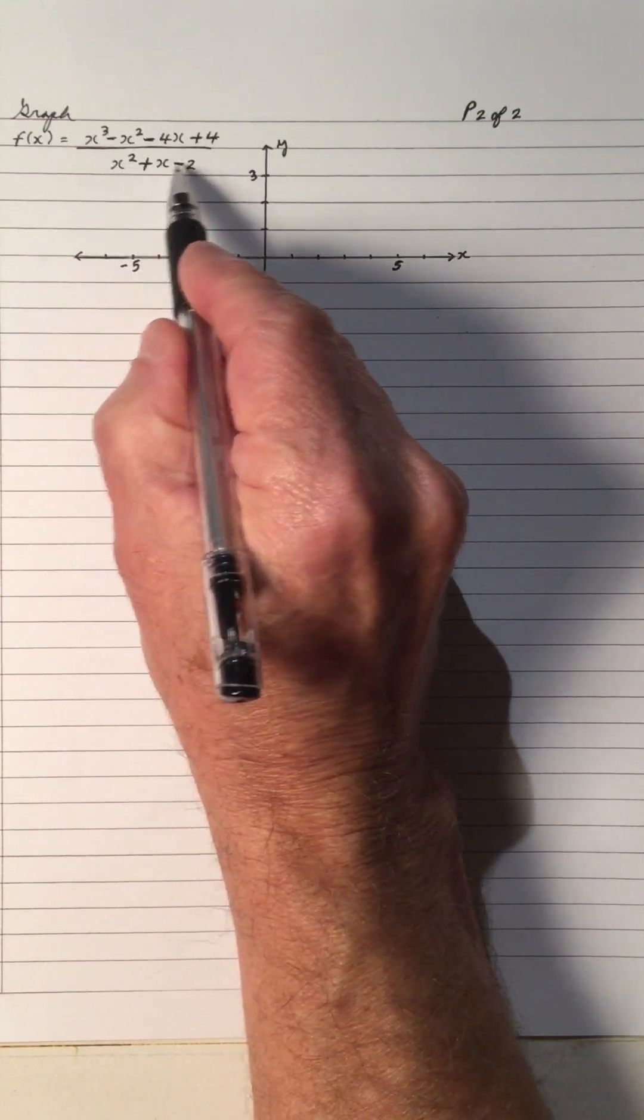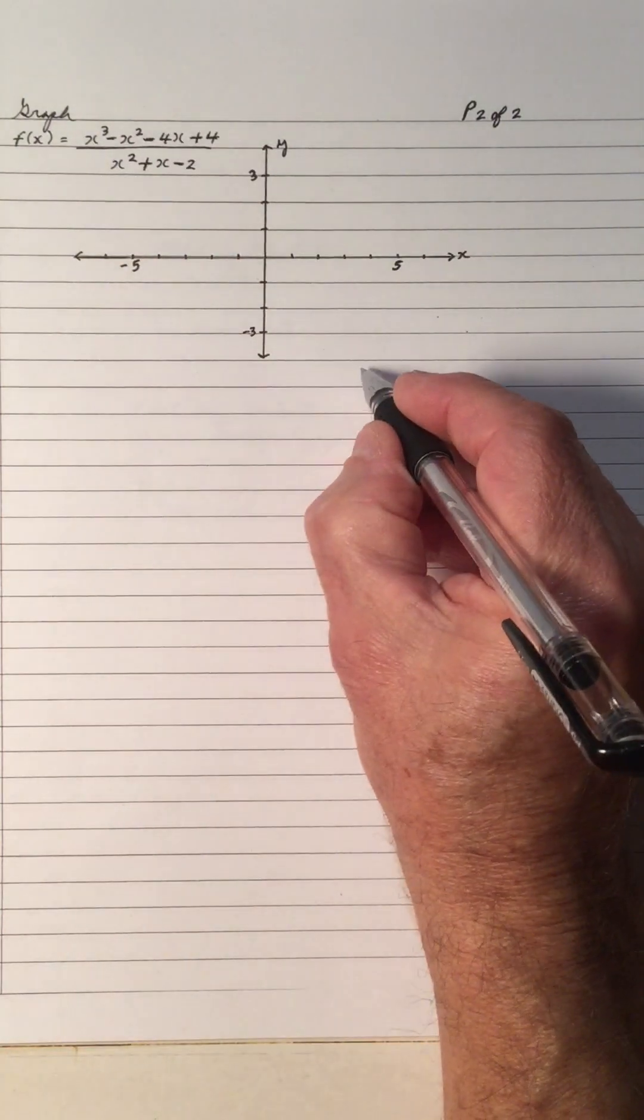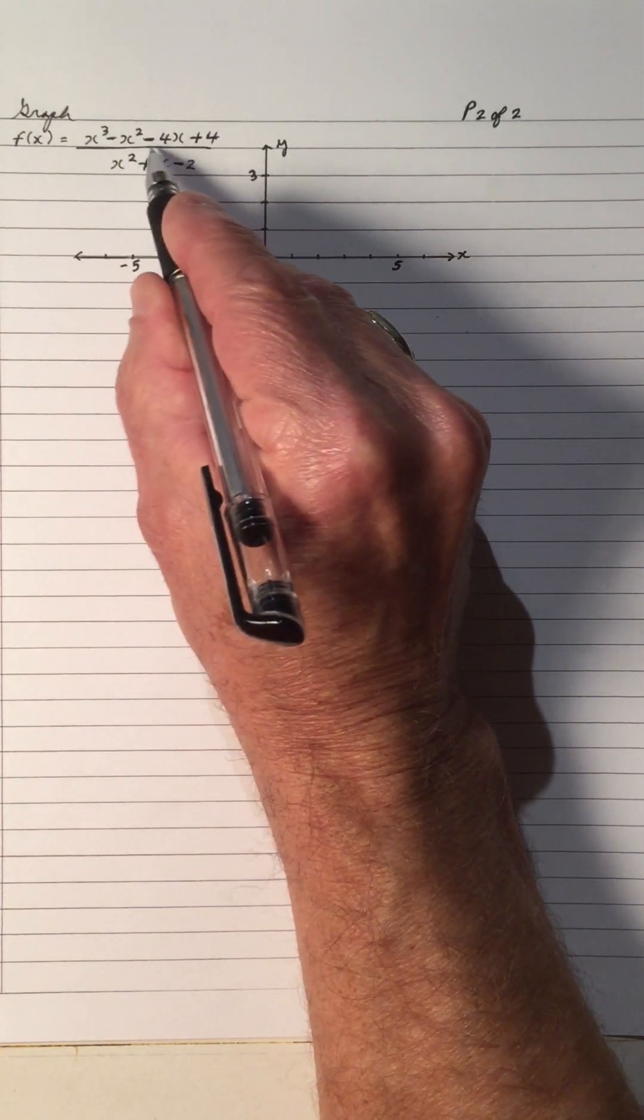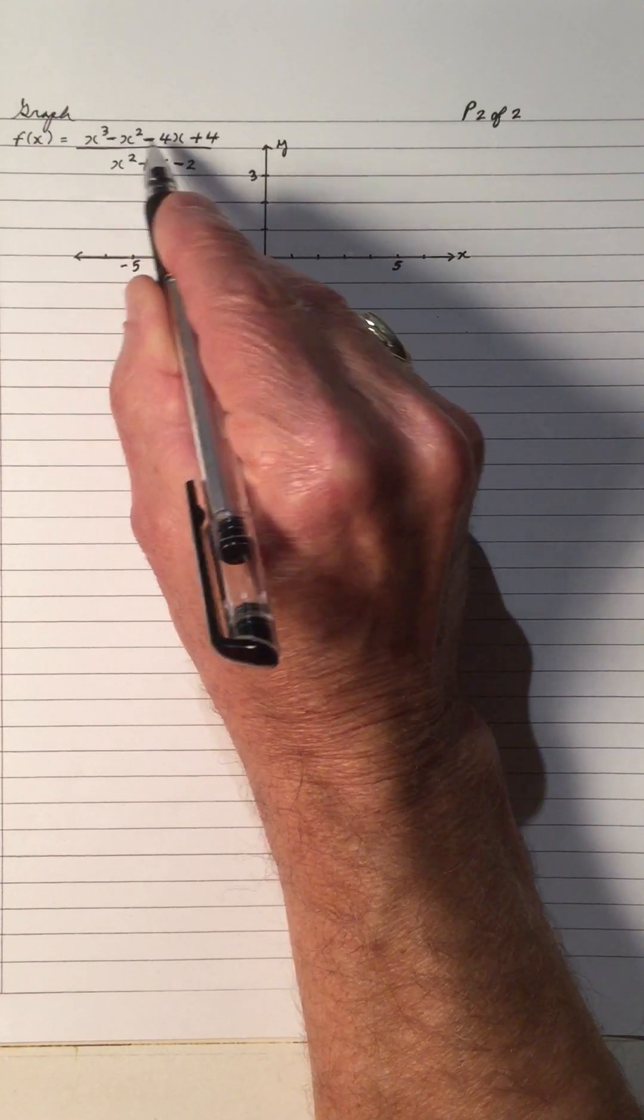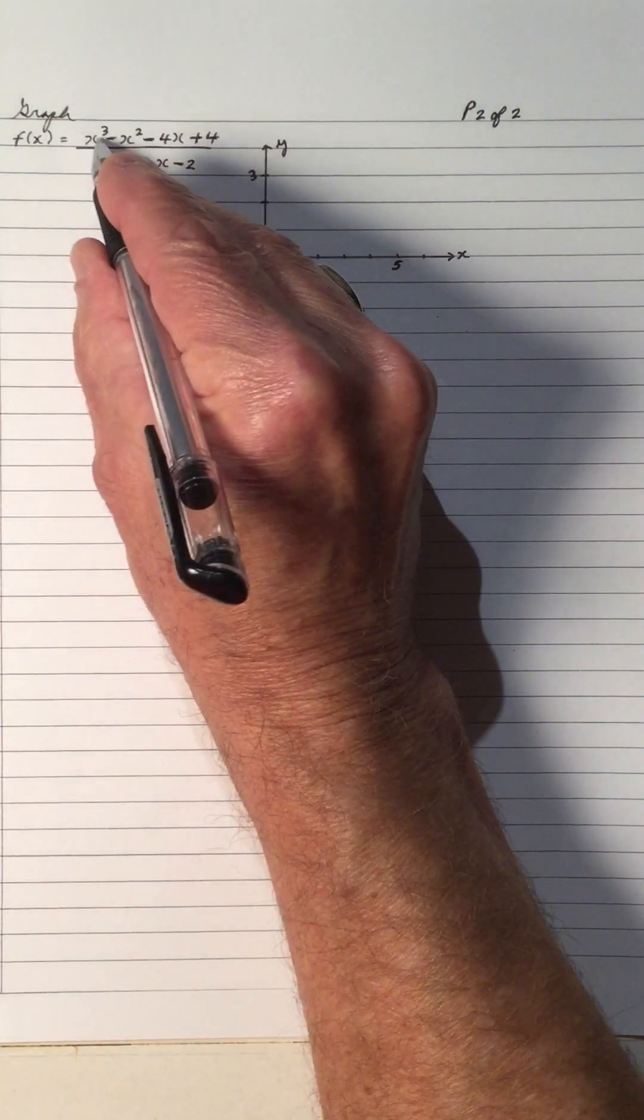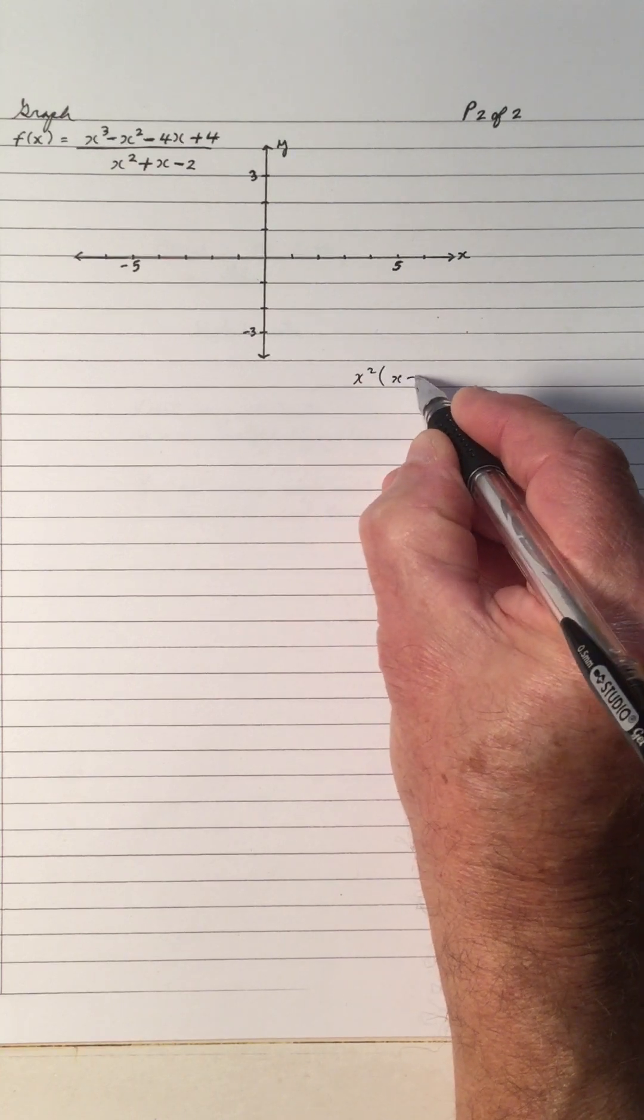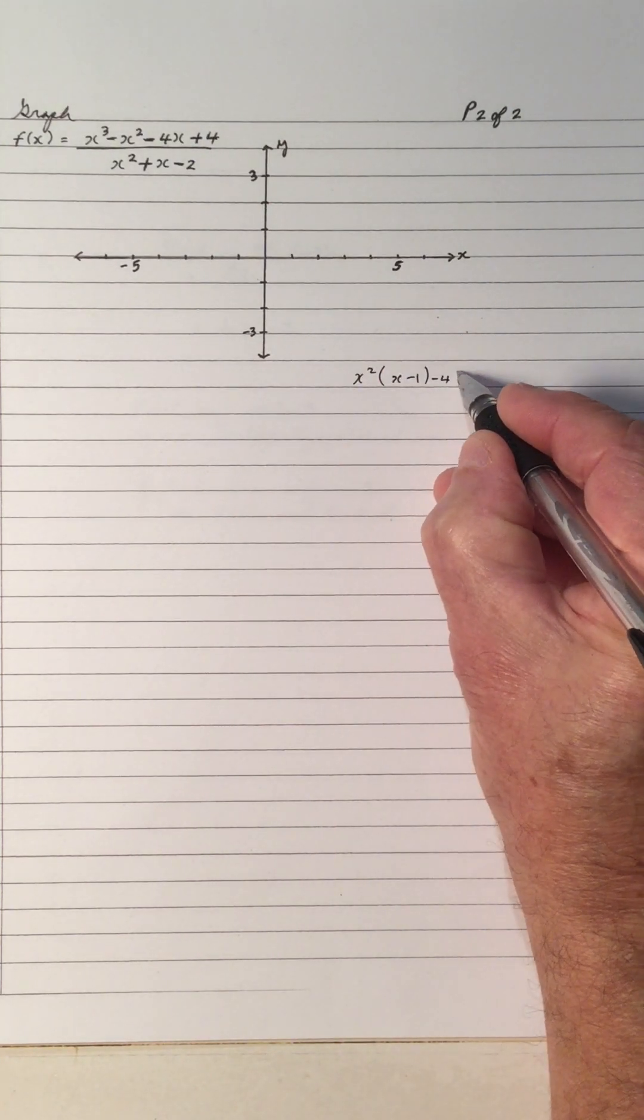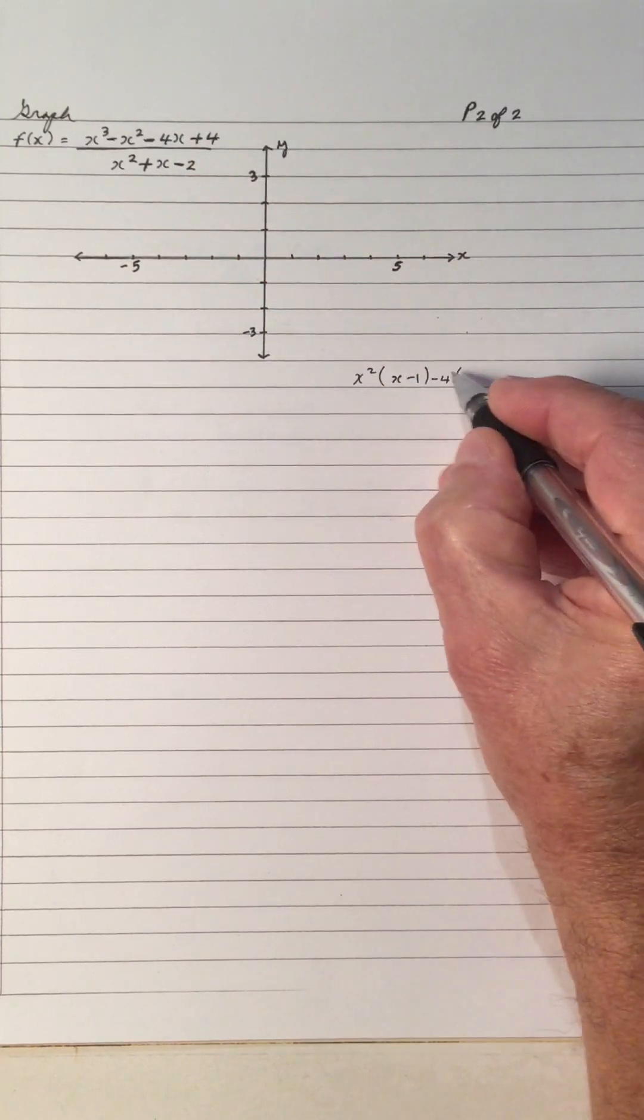Notice this is a cubic, and this is a quadratic. So if we take the cubic and try to factor it to see if this becomes simpler, notice that we have an x squared common here and we have a 4 common. So let's say we can take out this equation. I'm going to take x squared out of the first two, so that gives us x minus 1. Out of these two, I'm going to take a minus 4 out, and take a negative 4 out of these two, divided by negative 4, we get x minus 1.